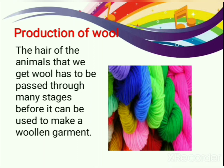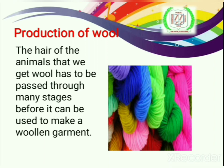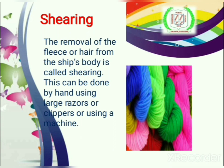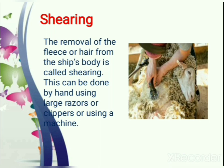Now, production of wool. The hair of the animals from which we get wool has to be passed through many stages before it can be used to make a woolen garment. The first stage is shearing — the removal of the fleece or hair from the sheep's body is called shearing. This can be done by hand using large razors or clippers, or using a machine.